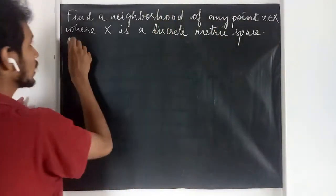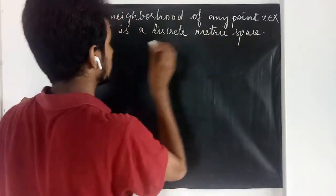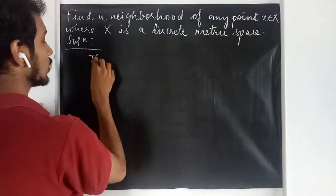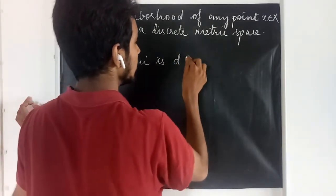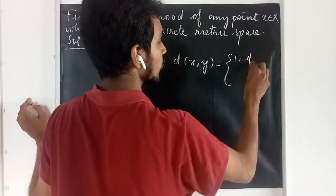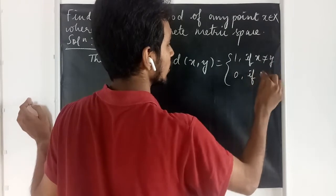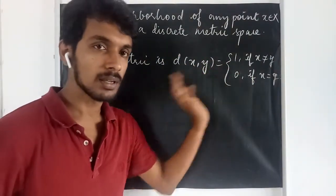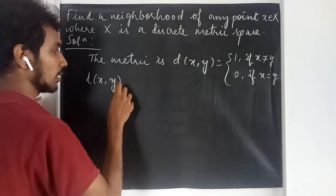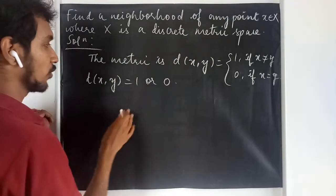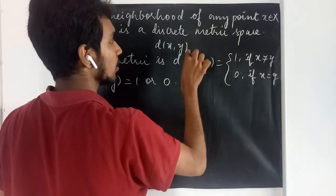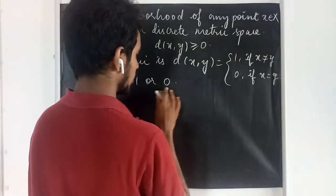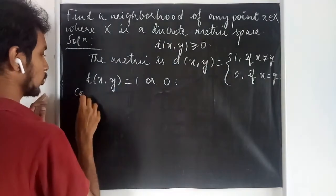It is given that x is a discrete metric space. The metric defined on it is: d(x, y) = 1 if x and y are different, and 0 if x and y are the same. So d(x, y) takes only two values: either 1 or 0. We know d(x, y) is always non-negative.